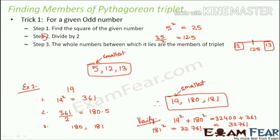Another important caveat: this trick will always find a Pythagorean triplet for a given odd number, but that does not mean it is the only triplet containing that number. For example, 5, 12, 13 is one triplet, but 12 could also be part of another triplet where 12 is the smallest member. Multiple triplets involving the same number are possible, and not all can be found using this trick, as it is derived from back-calculation of the Pythagoras formula.